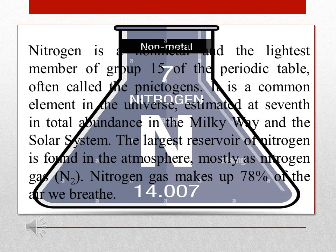Nitrogen is a non-metal and the lightest member of group 15 of the periodic table, often called the pnictogens. It is a common element in the universe, estimated at 7th in total abundance in the Milky Way and in the solar system. It makes up 78% of the air.